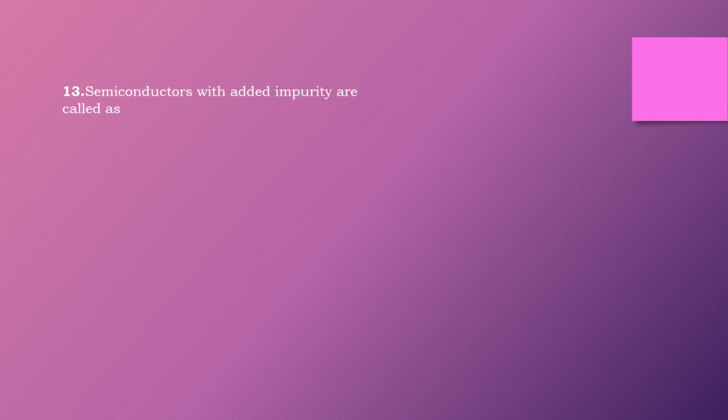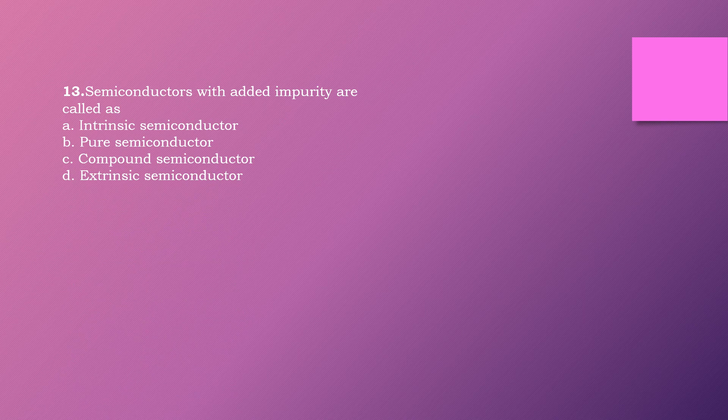Question thirteen: Semiconductors with added impurity are called as dash. Options are: intrinsic semiconductor, pure semiconductor, compound semiconductor, extrinsic semiconductor. The right answer is option D: extrinsic semiconductor.